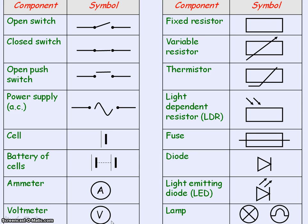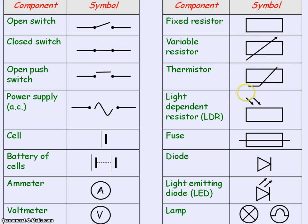Here is a voltmeter which measures the voltage or the potential difference across components. The next five symbols have the basic rectangle shape which represents a resistor, with the variable resistor having an arrow through the rectangle. This one is representing a thermistor, which is a temperature dependent resistor, so the resistance changes with temperature.